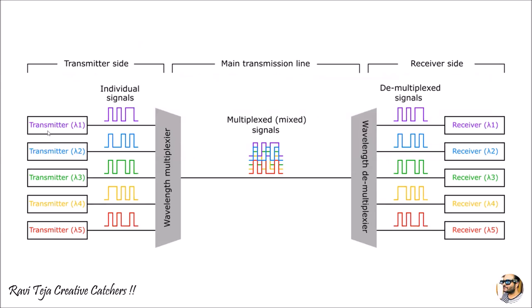Coming to the diagram, we can see several transmitters: Transmitter 1 with wavelength λ1, Transmitter 2 with λ2, Transmitter 3 with λ3, Transmitter 4 with λ4, and Transmitter 5 with λ5. These transmitters send signals of different wavelengths into a multiplexer, where all wavelengths are combined into a single signal. This multiplexed signal is transmitted over the optical fiber cable to the demultiplexer, which separates the signals according to their wavelengths and delivers them to their respective receivers.